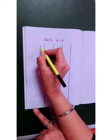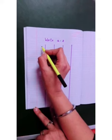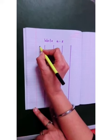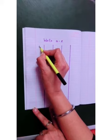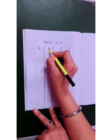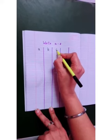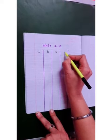So let's start writing alphabet a to z. A for aeroplane, b for basket, c for cat, d for drum.